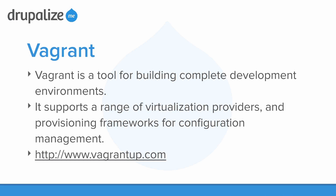Let's take a look at each of the different pieces we'll be working with throughout this learning series. The first one is Vagrant. Vagrant is a tool for building complete development environments. It supports a range of virtualization providers and provisioning frameworks for configuration management. You can read more about it at vagrantup.com. It is an open source product and it's been around since 2010. The original developer, Mitchell Hashimoto, is now working on Vagrant as his primary job, which is really great. I love to see when open source products are able to support someone like this.